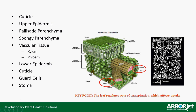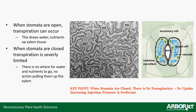The leaf regulates your rate of transpiration, which affects uptake. When stomata are open, transpiration can occur — oxygen and water vapor escape, creating a pull effect that moves water and nutrients from the roots up through the tree into leaf tissue, carrying injected product with it. When stomata are closed, transpiration is severely limited — there's nowhere for water and nutrients to go, no action pulling them up, because the tree is no longer losing something it needs to replace.